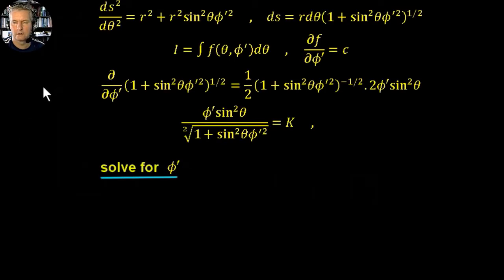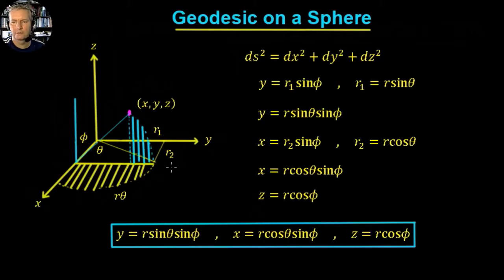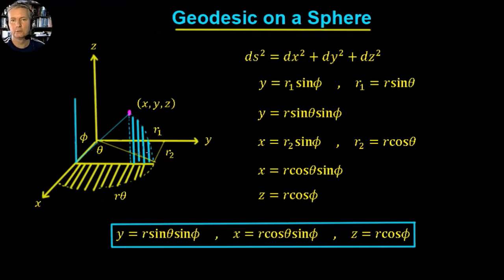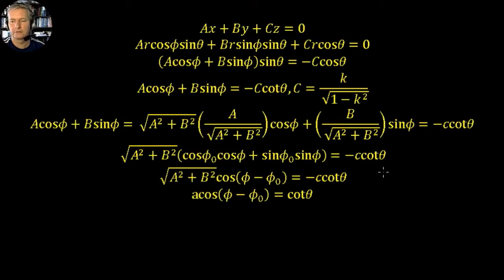It turns out that a cos(φ − φ₀) = cot θ is the equation of a plane in spherical coordinates. The plane passes through the origin and also passes through the surface of the sphere. So the shortest distance between two points on the sphere is always given by a particular plane passing through the origin and cutting the surface — in effect, we're looking at the great arcs, or the diameters of the sphere, and those are the shortest distances between two points.